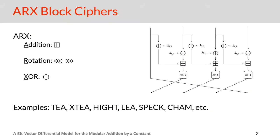In this work we study the constant addition, but where does this operation appear? The answer is the ARX primitives, which mainly include A for Modular Addition, R for Rotation, and X for XOR as building blocks. You can see the round function of the ARX block cipher LEA here. Some other ARX block ciphers are TEA, XTEA, HIGHT, and SPECK. Also we can name the ARX block cipher CHAM, which is recently introduced by Korean designers. There are other ARX constructions like hash functions or stream ciphers, but we mainly pay attention to block ciphers.